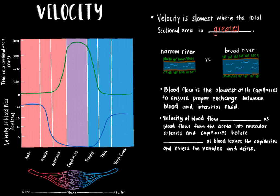In the same way, blood flow becomes slower as the surface area increases because the blood interacts more with the blood vessel walls. As blood approaches the capillaries, blood flow is slower because capillaries have the largest surface area out of all blood vessels due to their dense branching. The relatively slow rate of blood flow through capillaries is vital to ensure the proper exchange of materials between the blood and interstitial fluid. Once blood passes through the capillaries and into the venules, the venules converge to form veins and the blood flow speeds up again. In summary, velocity decreases from the aorta through muscular arteries, arterioles, and into capillaries, before increasing as blood enters venules and then veins.